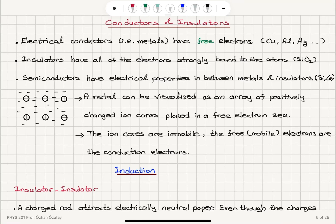In terms of the transfer of charge inside a material, we can talk about two extreme cases: conductors and insulators. Electrical conductors are materials that can conduct electricity — electron transfer is allowed — and they are metals, such as copper, aluminum, and silver. In these materials, the valence electrons in the atoms will be detached from the atom due to thermal energy and released to the crystal lattice, moving freely around inside the material.